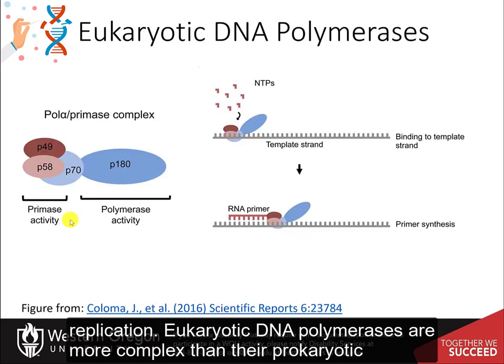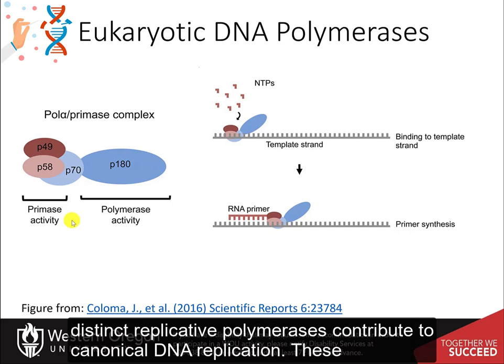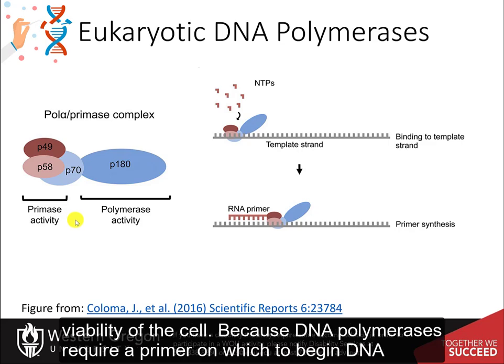Eukaryotic DNA polymerases are more complex than their prokaryotic counterparts, but essentially serve very similar functions during the replication process. Three distinct replicative polymerases contribute to canonical DNA replication: these are the alpha, delta, and epsilon polymerases. These three polymerases are essential for viability of the cell.